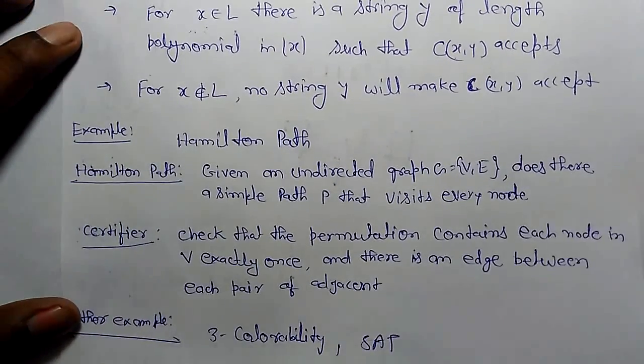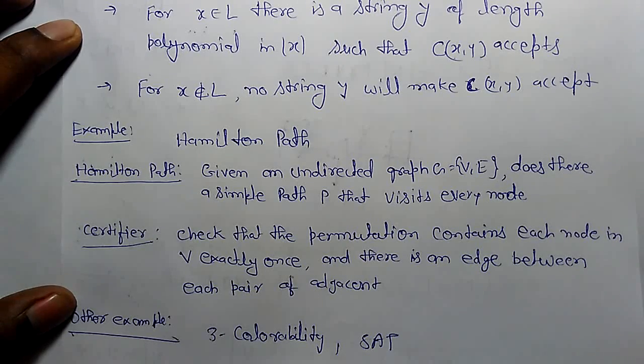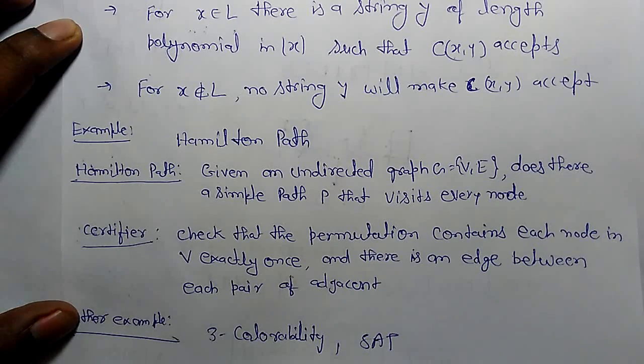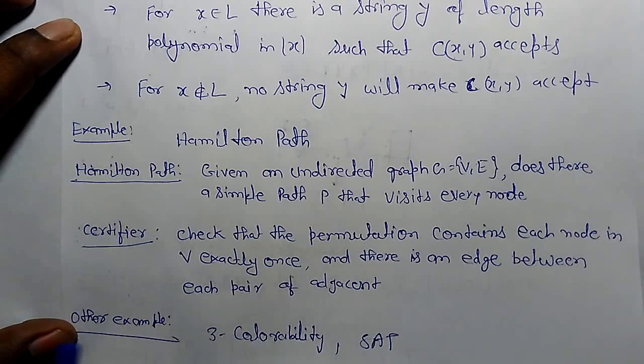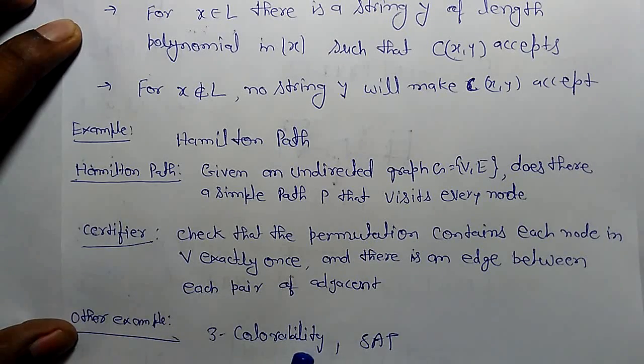An example of NP is Hamilton path. Given an undirected graph G, does there exist a simple path P that visits every node? The certifier checks that the permutation contains each node in V exactly once and there is an edge between each pair of adjacent nodes. Other NP problems include 3-colorability and SAT.